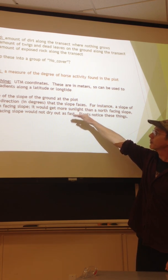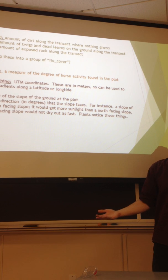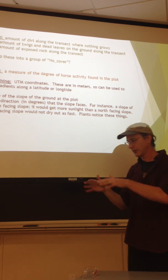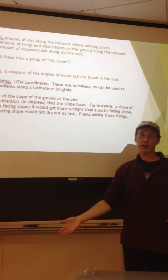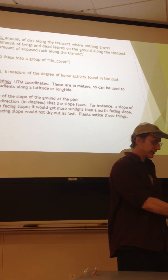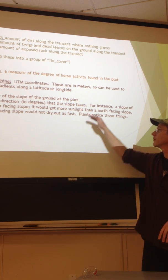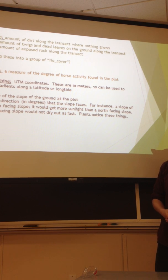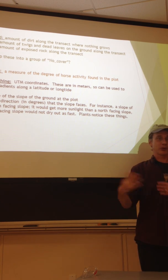And then slope and aspect, those could factor in as well. If it's facing north on a slope, it's going to have cooler weather than something that's facing south on a slope. So those are other parameters that you might want to check for correlations and data.